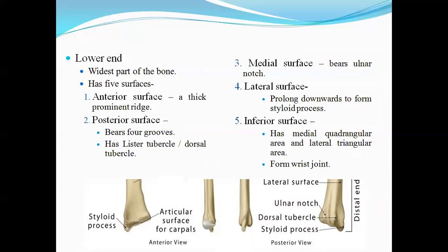The lateral surface bears the styloid process. The medial surface has the ulnar notch, where the head of the ulna articulates to form the inferior radioulnar joint. The inferior surface articulates with the carpal bones. There is a quadrangular facet medially and a triangular facet laterally, forming the wrist joint.